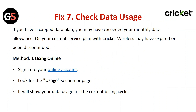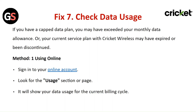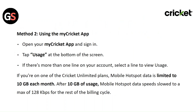Fix seven: Check data usage. If you have a capped data plan, you may have exceeded your monthly data allowance, or your current service plan with Cricket Wireless may have expired or been discontinued. Method one — using online: sign into your online account and look for the usage section or page, which will show your data usage for the current billing cycle. Method two — using the My Cricket app: open the app, sign in, and tap on 'Usage' at the bottom of the screen. If there is more than one line on your account, select a line to view usage. On Cricket Unlimited plans, mobile hotspot data is limited to 10 GB each month.